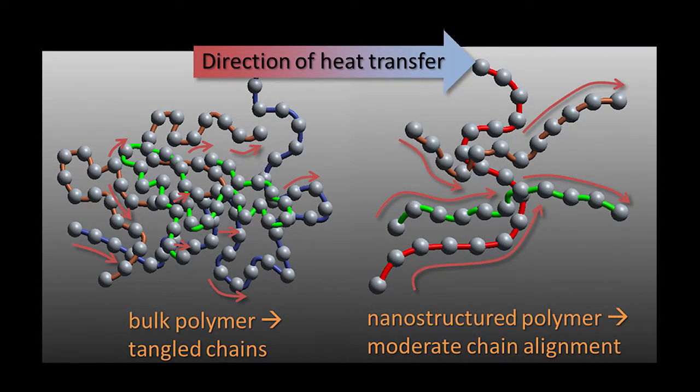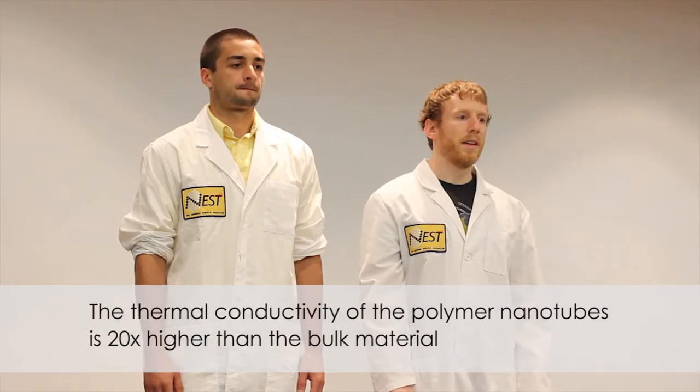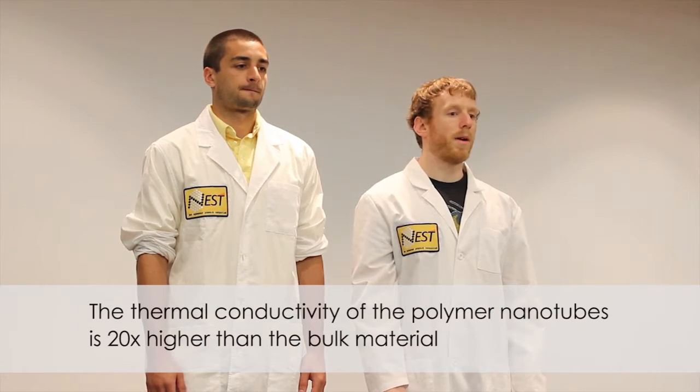As you probably know, bulk amorphous polymers exhibit low thermal conductivity because the chains are tangled, which increases phonon scattering within the material. But if the chains are aligned in the direction of heat transfer, phonons can propagate along the polymer backbone, allowing for higher thermal conductivity, in our case 20 times higher than the bulk polymer.